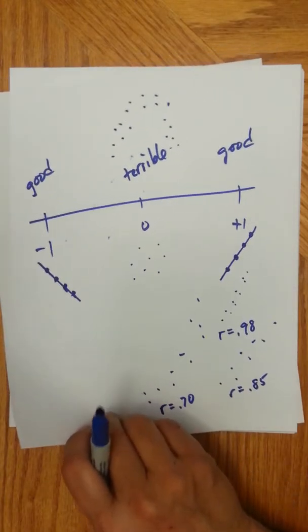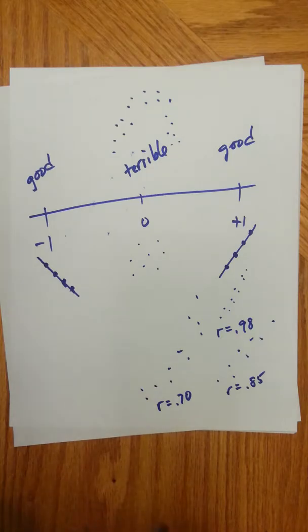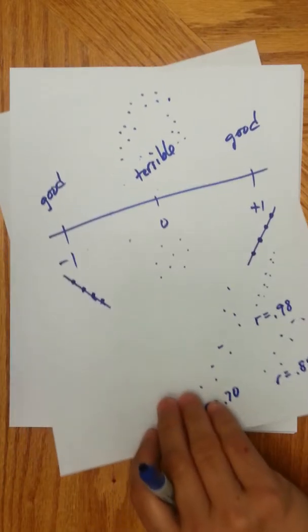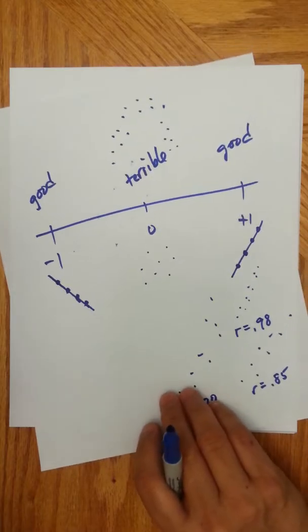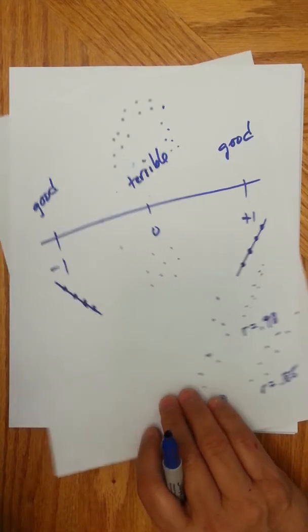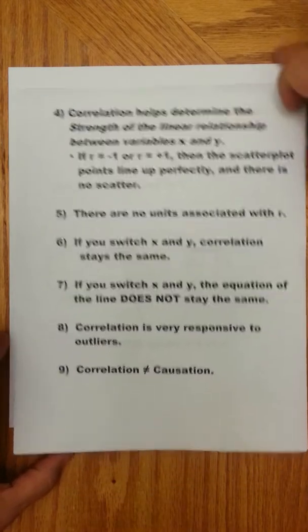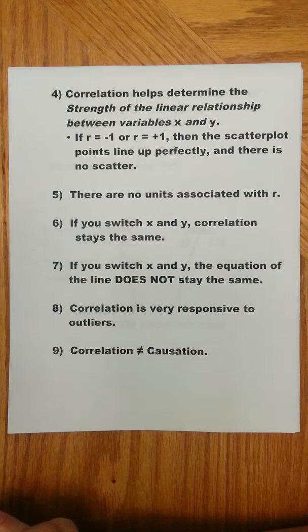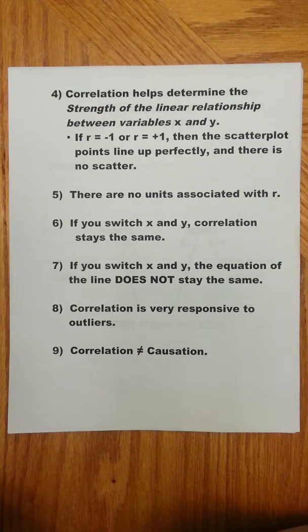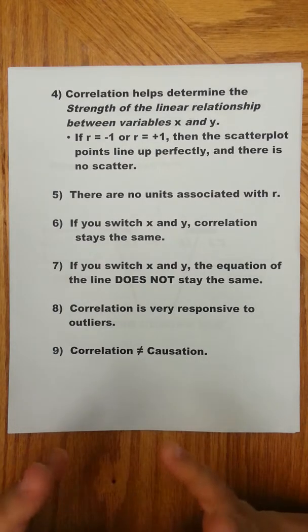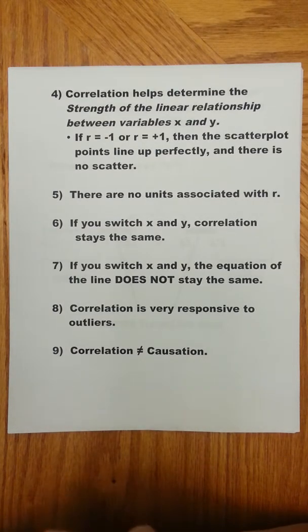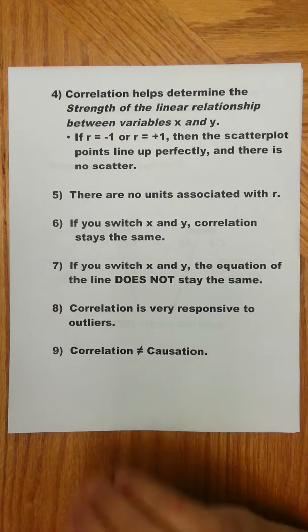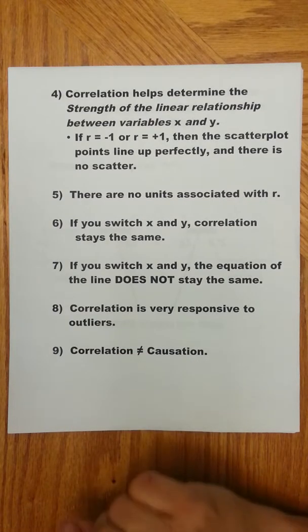So you basically have these kind of things happening. And so we're going to look at how to tell, well, okay, what is likely to be a correlation coefficient for a particular scatter plot. Let's take a look at it a little bit here. A few more ideas that I want you to know about correlation coefficient. So it helps determine the strength of the linear relationship. Again, the closer that your correlation coefficient is to positive or negative 1, the better a line fits your data. Also, there are no units associated with R. The units get canceled out.